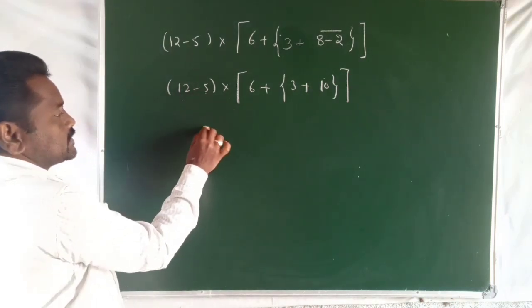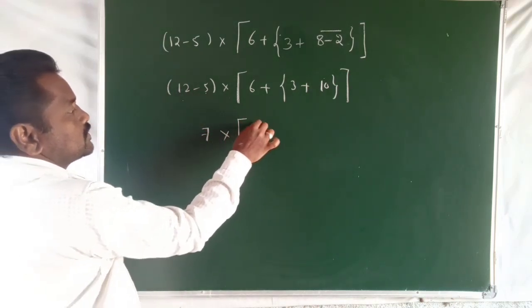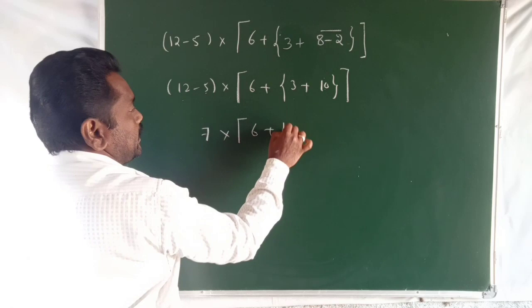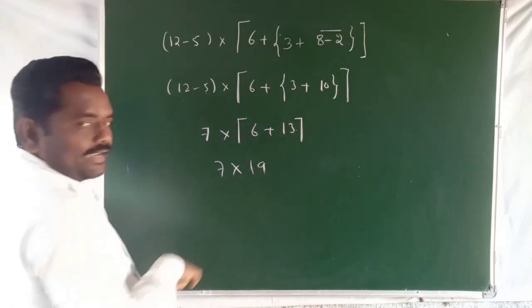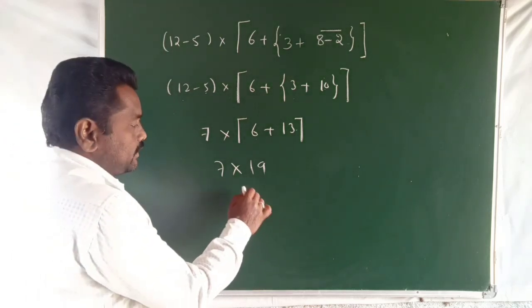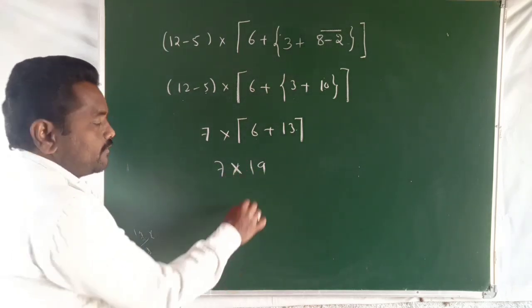So this is 7 into 6 plus 13. That is 7 into 19. So 7 into 19 equals 133.